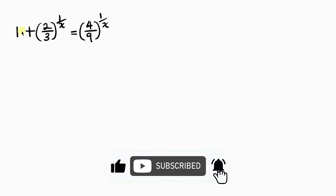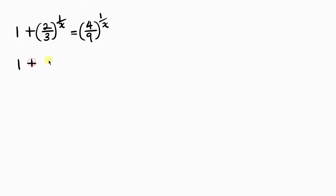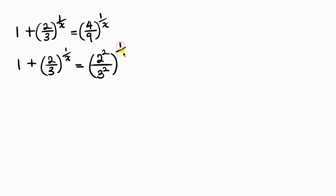Notice that 4 is a perfect square — it can be written as 2 squared — and 9 is also a perfect square — it can be written as 3 squared. So the right-hand side becomes (2 squared over 3 squared) raised to the 1 over x.